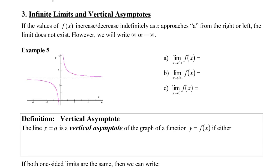So if the values of f(x) increase or decrease indefinitely as x approaches A from the right or left, the limit does not exist. However, instead of writing 'does not exist,' we're going to write infinity or negative infinity so we know what direction the graph is going in.